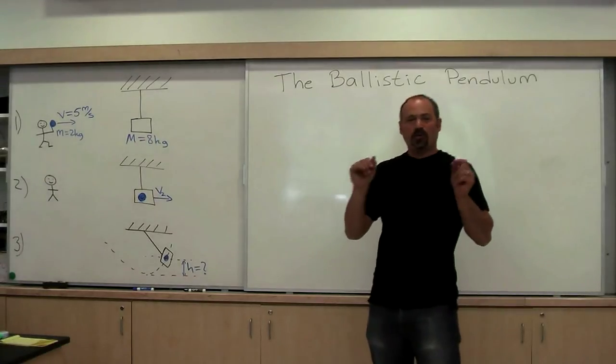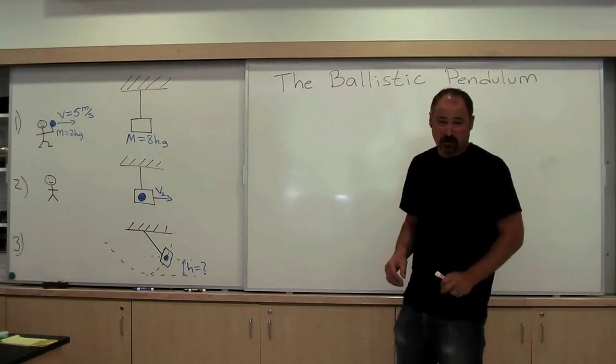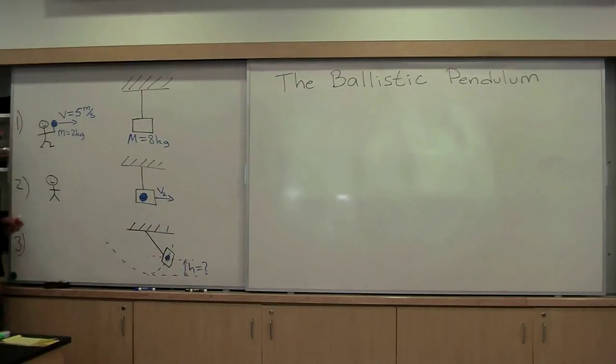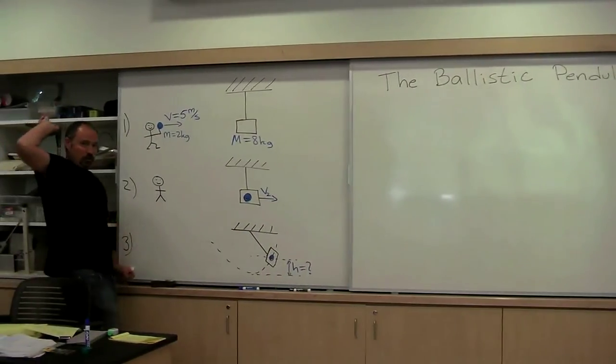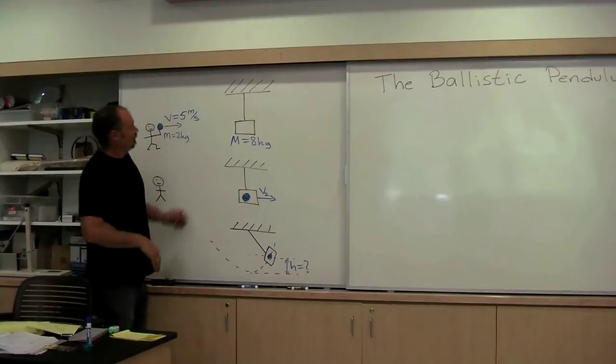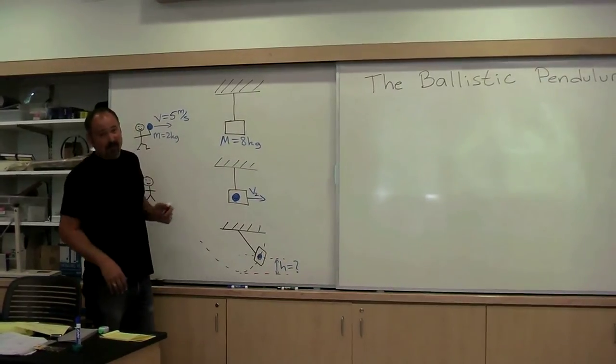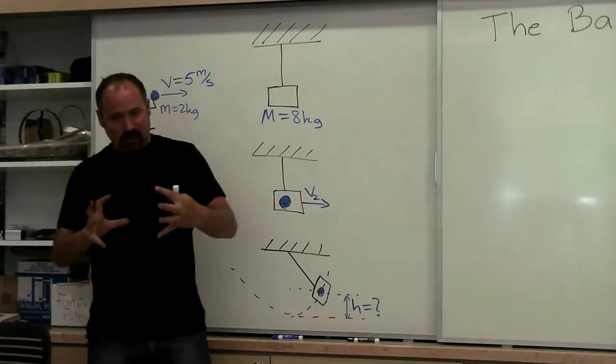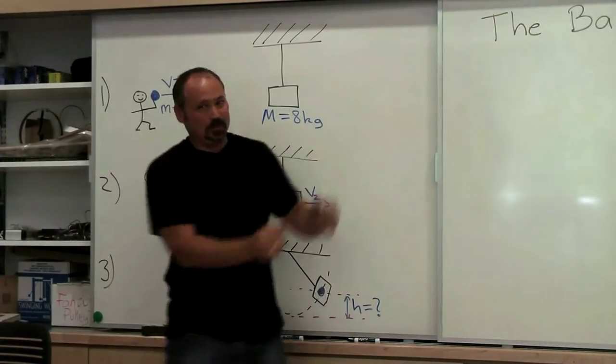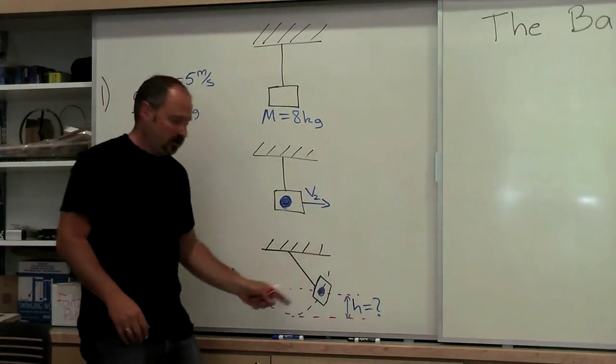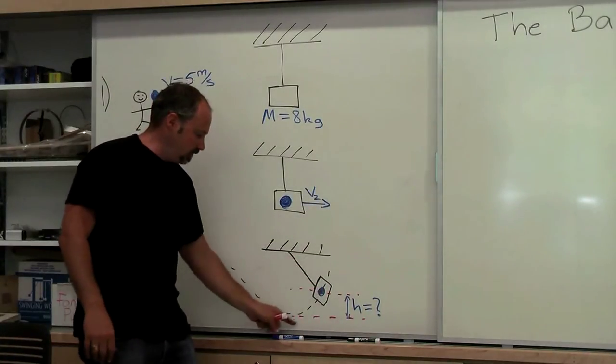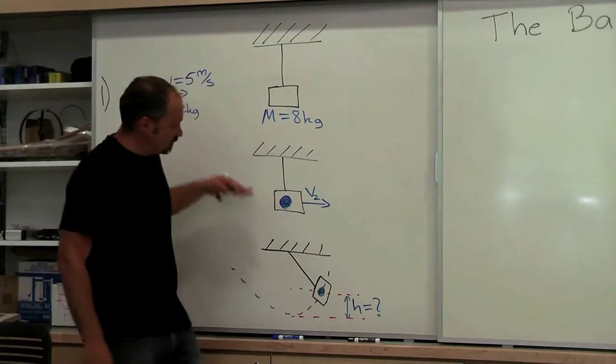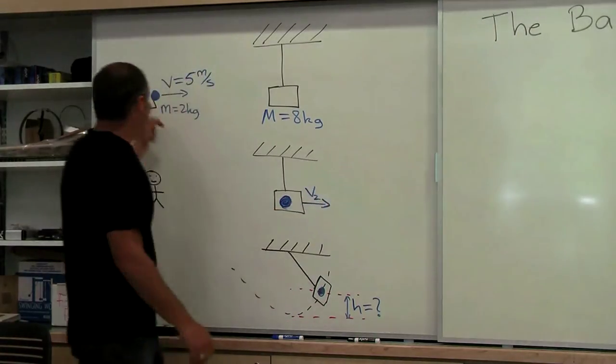Here's a case where we need to use both energy and momentum conservation in order to solve the problem. Here's a situation. You've got a guy here who's throwing a two kilogram clay ball at a block of wood that's eight kilograms of mass. It hits the block. The two then have speed which carries it up along its arc to a certain height above its lowest point. And the question is how high should this thing swing up after the collision?